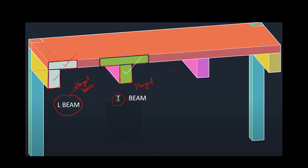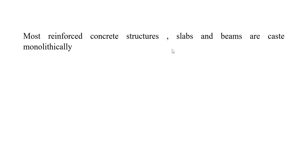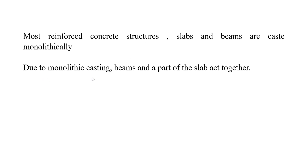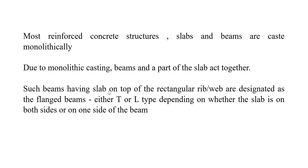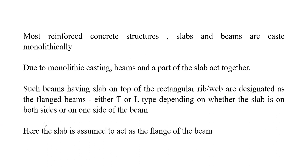In most reinforced concrete structures, slabs and beams are cast monolithically. Due to this monolithic casting, beams and a part of the slab act together. Such beams having a slab on top of the rectangular rib or web are designated as flange beams — either T-type or L-type — depending on whether the slab is on both sides or on one side of the beam.